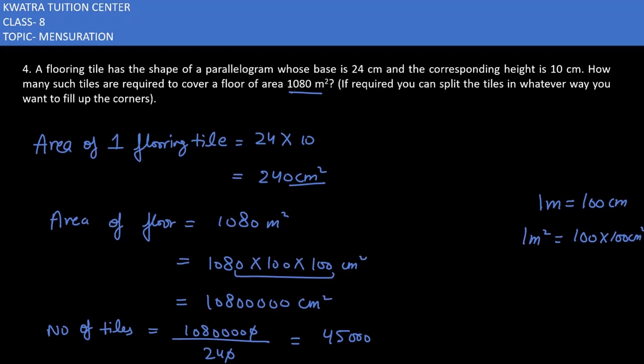So you need 45,000 tiles to cover 1080 meter square. With 45,000 tiles you will be able to cover the entire floor. Now we will be doing the last question of exercise 11.1, which is question number five.